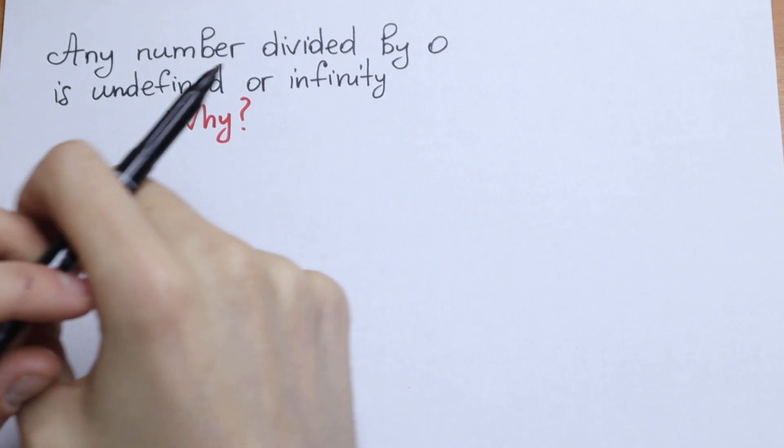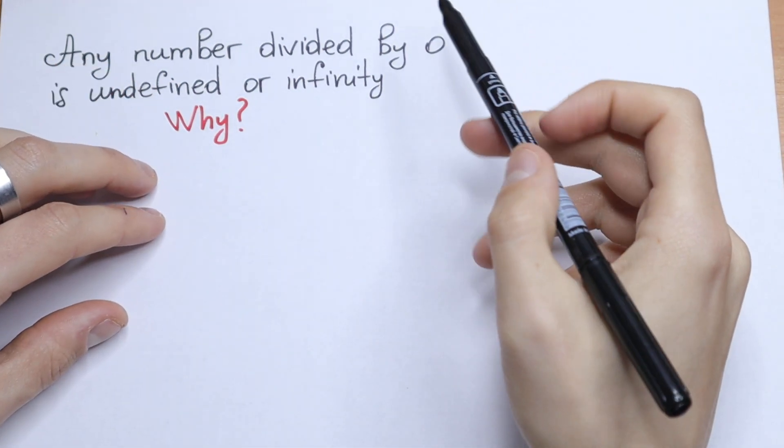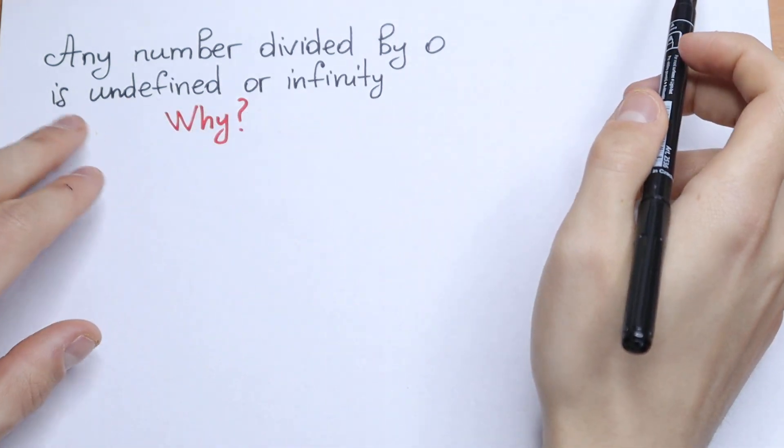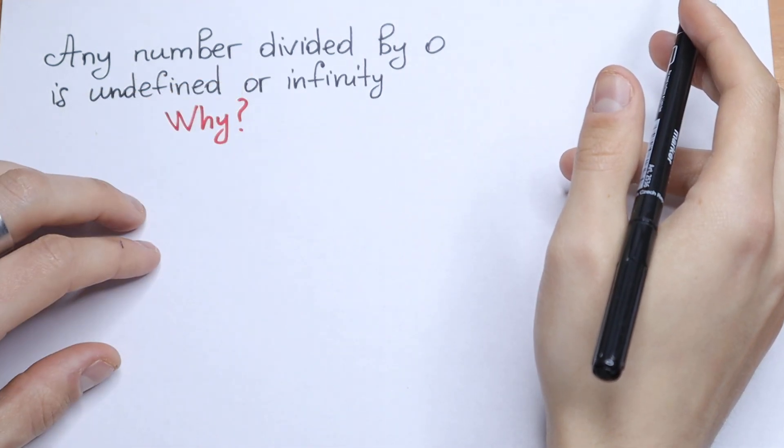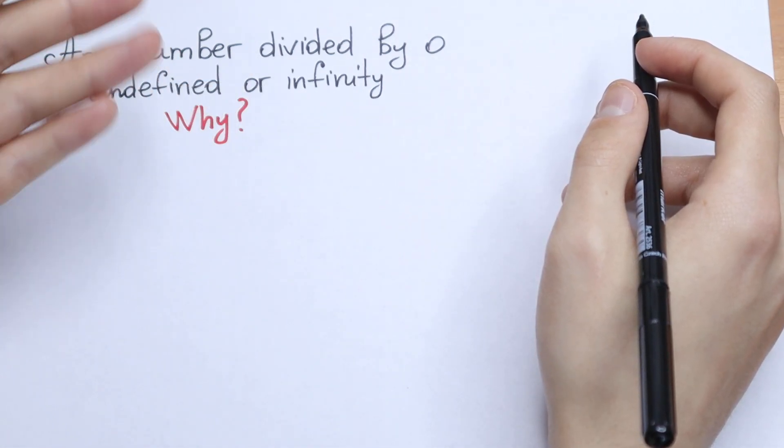Hello everyone, welcome back to higher mathematics. In this video I'm going to explain why any number divided by zero is undefined or infinity. So how can we explain that fact?